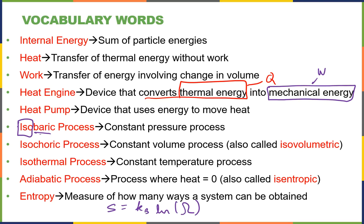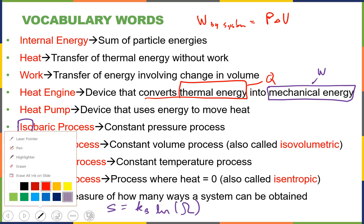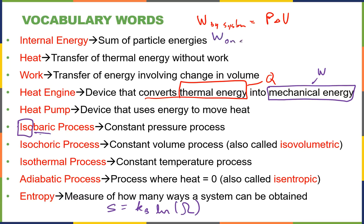For that problem there is one complication. You remember on Wednesday I said there are some textbooks that use a different convention for work. Instead of our convention that work is the work done by the system — where work by system is P·ΔV — that problem tells you they're using the work done on the system. So work on system equals negative P·ΔV, reversing the sign on the work.